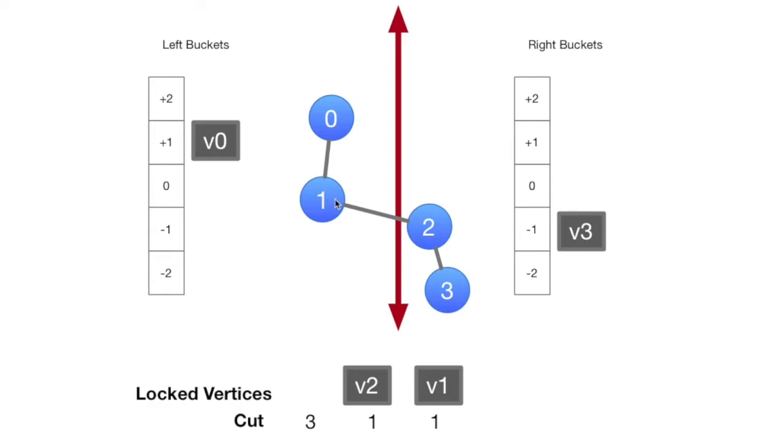And now that 1 has moved over, we have to update the vertices that are connected to it. This connection to 2, we can skip 2 because he's already fixed, we don't need to worry about fixing the gain for vertex 2, but vertex 0, he's over here. He used to be in the plus 1 bucket, but now that vertex 1 has moved over, it's actually going to hurt us by 1 if we move vertex 0. So we delete him from the plus 1 bucket, move him to the minus 1 bucket.